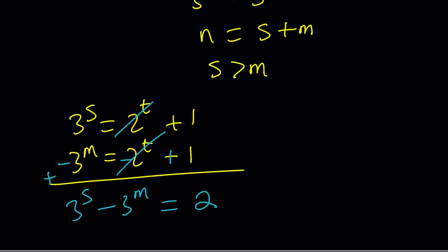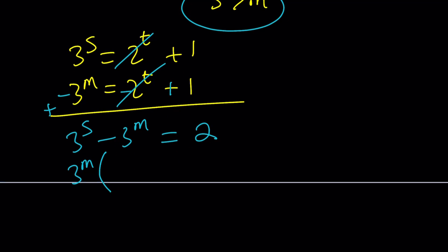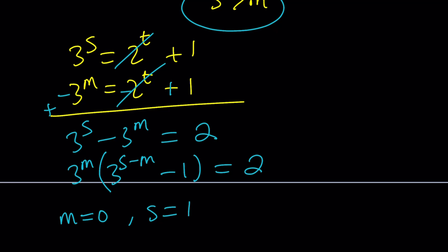We factor out 3 to the m from the left-hand side, giving 3 to the m times (3 to the power s minus m minus 1) equals 2. Since there are no factors of 2 on the left, 3 to the m must equal 1, so m equals 0. Then 3 to the s minus 1 equals 2, which means s equals 1. Plugging back in, t equals 1, and therefore a minus 1 equals 2t gives a equals 3.